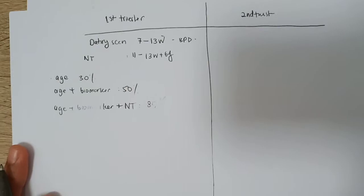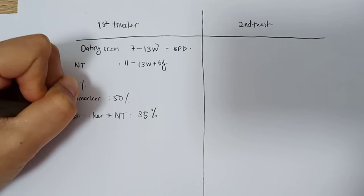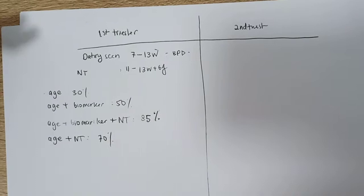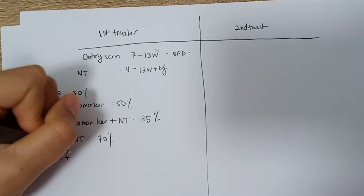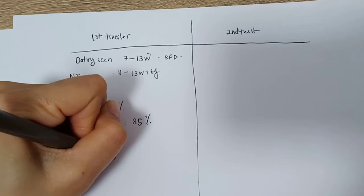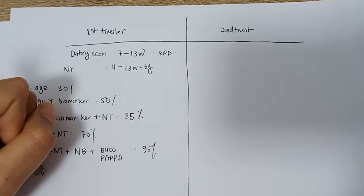If we only take age with nuchal translucency, it drops to 70% sensitivity. If we want to increase further the sensitivity, we add age plus nuchal translucency plus nasal bone and the biomarkers - beta-hCG and PAPP-A. This will increase up to 95%. And if you do ductus venosus alone, you can get a sensitivity of 80% to detect fetal anomaly.